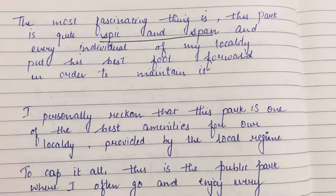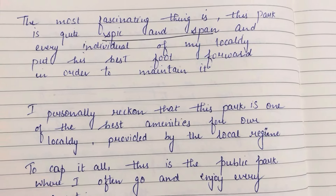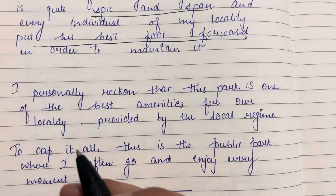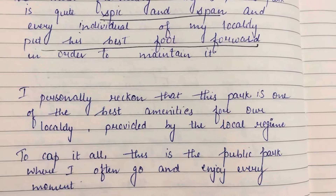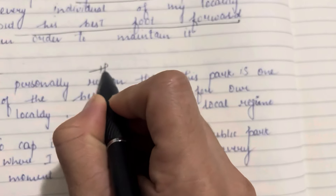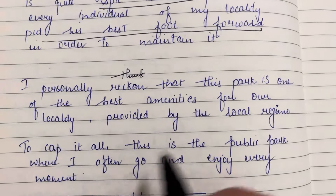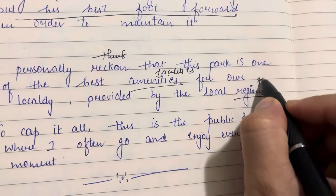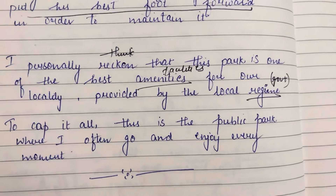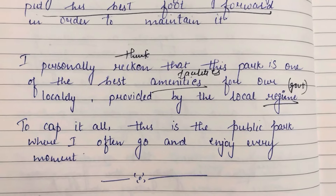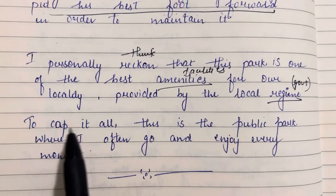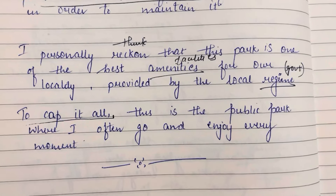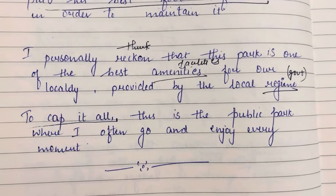So this park is one of the best amenities — meaning facilities — for our locality, provided by the local regime, meaning the government. Every individual of my locality puts his best foot forward in order to maintain it — 'put his best foot forward' means to give 100% effort. To cap it all — a closing idiom — this is the public park where I often go and enjoy every moment. That's how you can describe a public park. Thank you so much, have a good day!